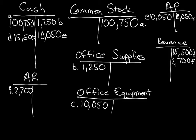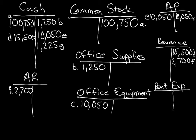Next, the company paid $1,225 cash for the monthly rent. Cash went out of the company — cash is an asset account, so in order to decrease an asset account you credit it. We credit cash $1,225. They paid rent, so rent expense is an expense account. In order to increase an expense account — because that's the amount they paid out — you debit it, so we debit rent expense $1,225.